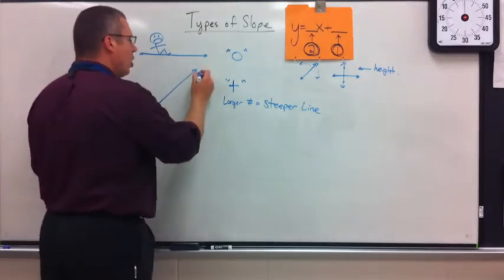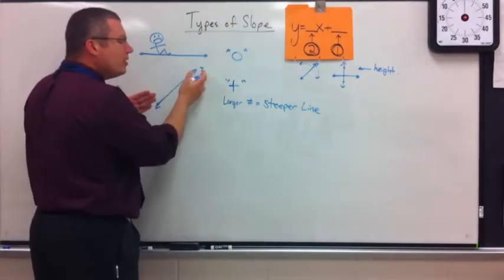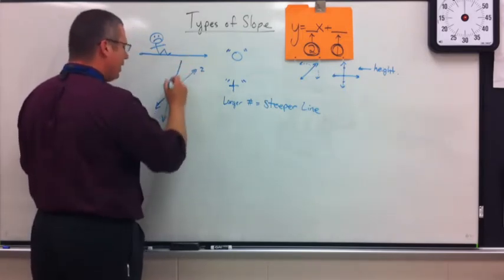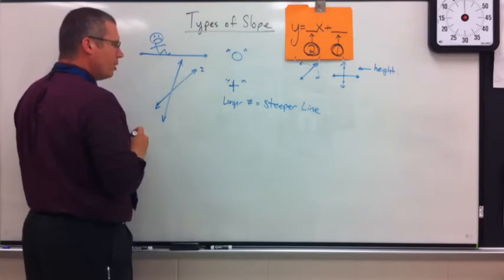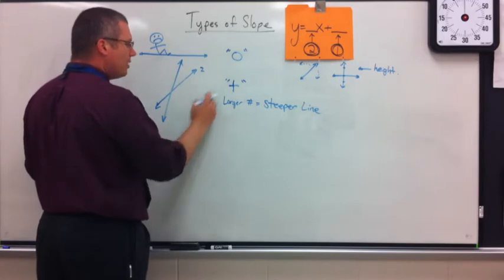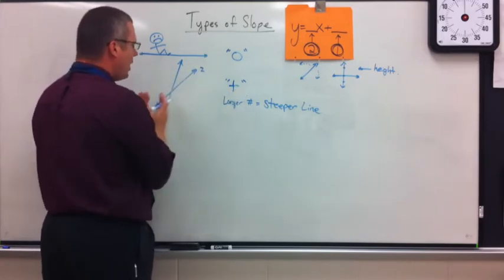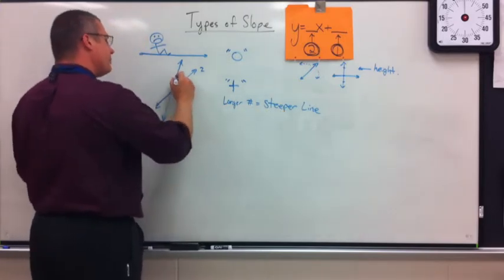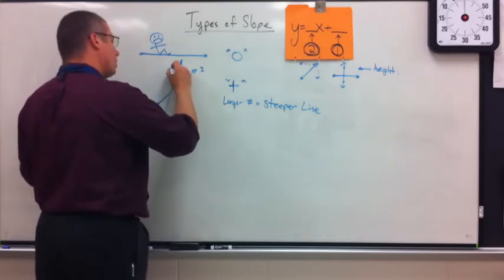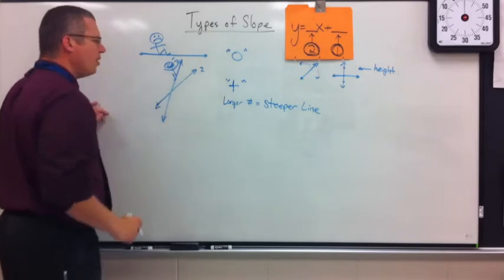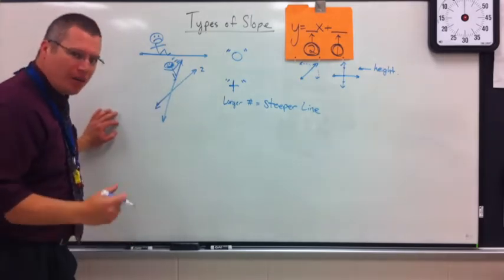This might be a slope of two. If I wanted to raise this to, like, a slope of seven, realize my slope would be a lot steeper. But nonetheless, from left to right, my line is going up, and it's a positive, because from left to right, I am heading in a positive direction. The larger the number, the steeper it is. And again, the larger the number, the more fun it would be.